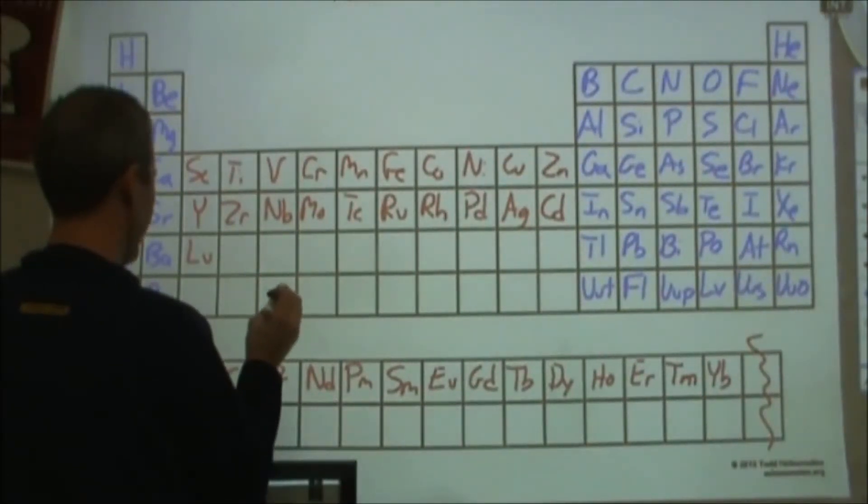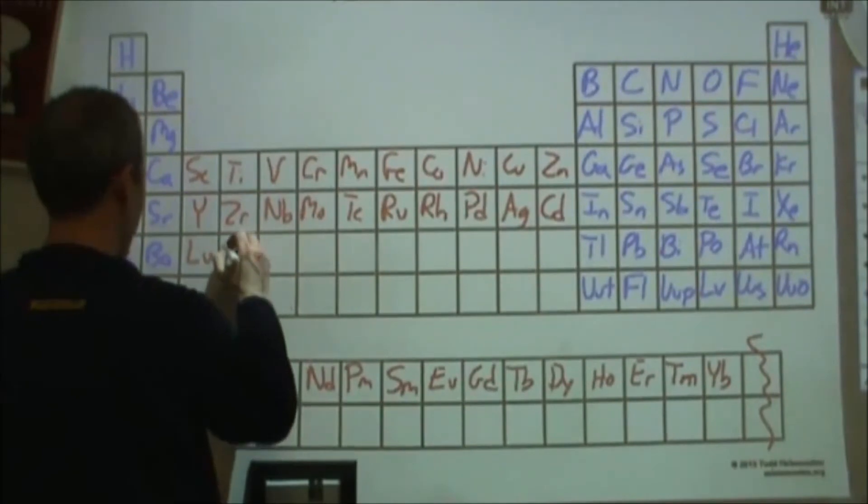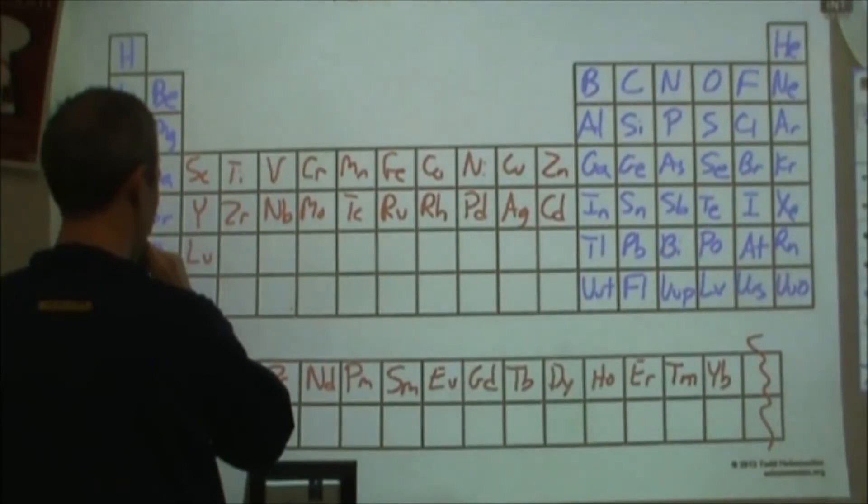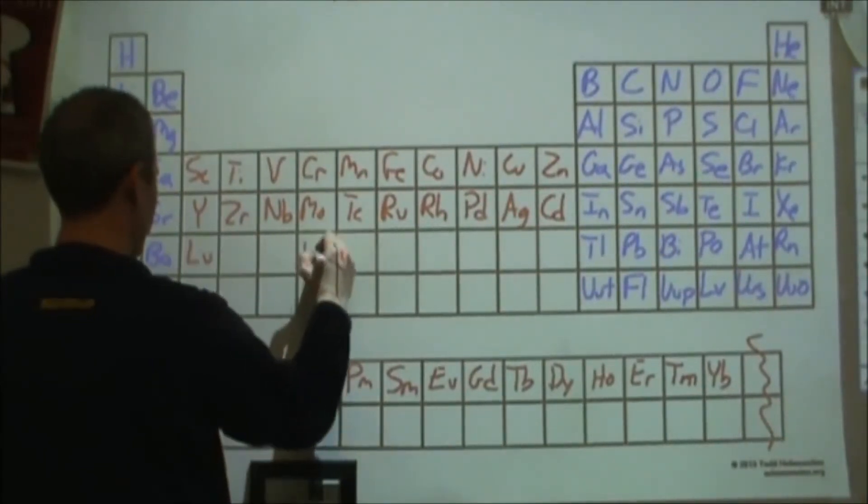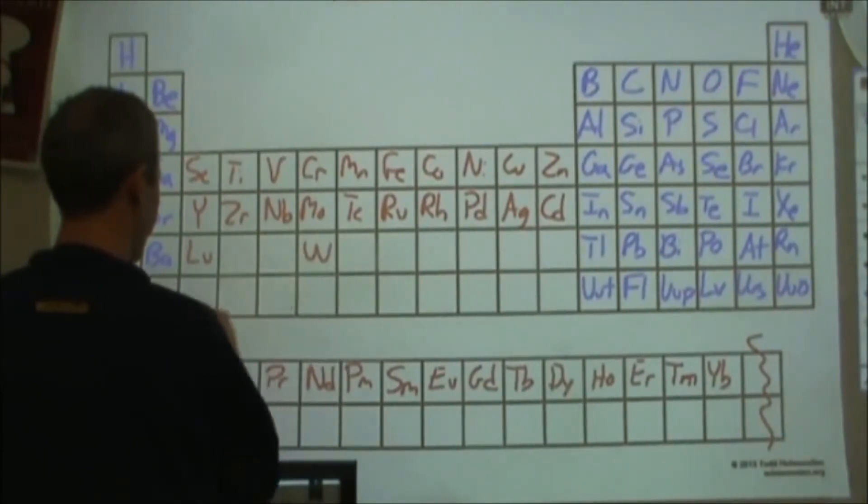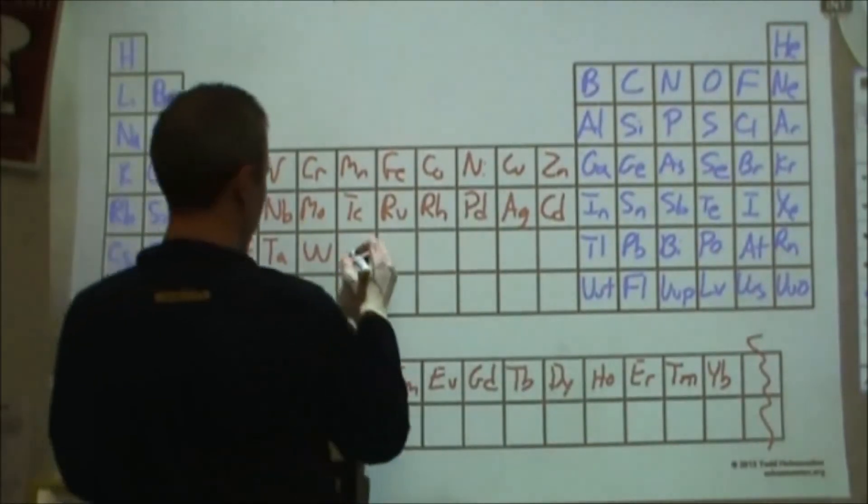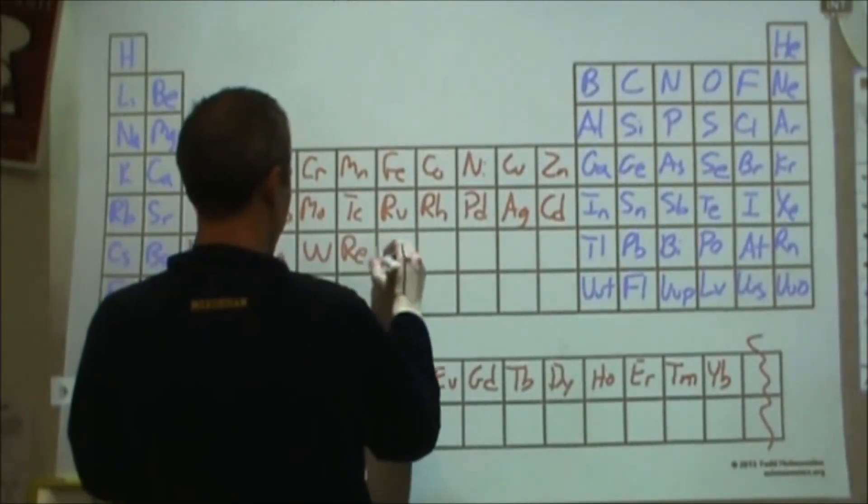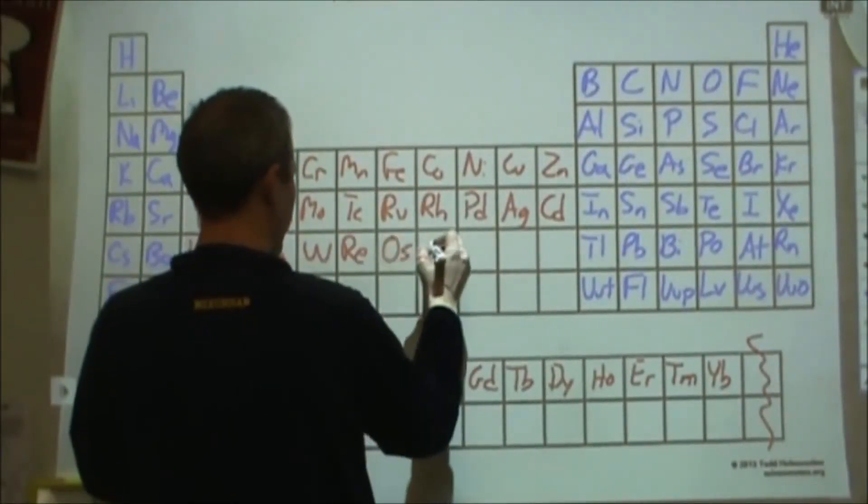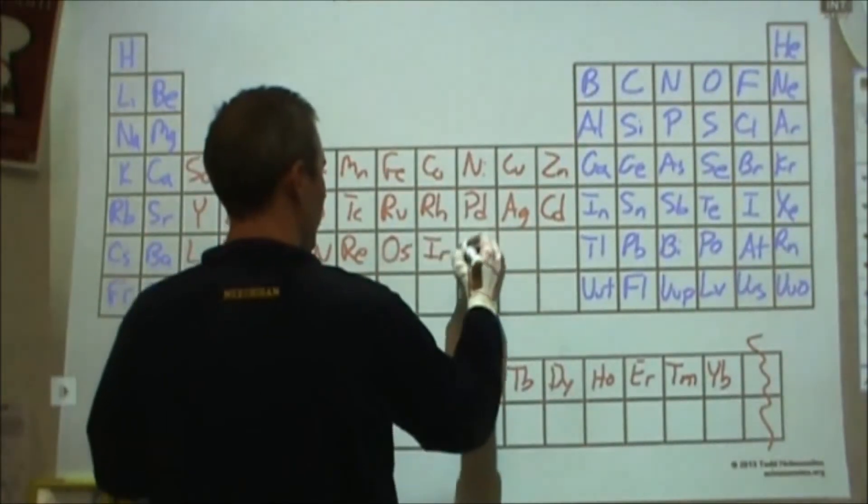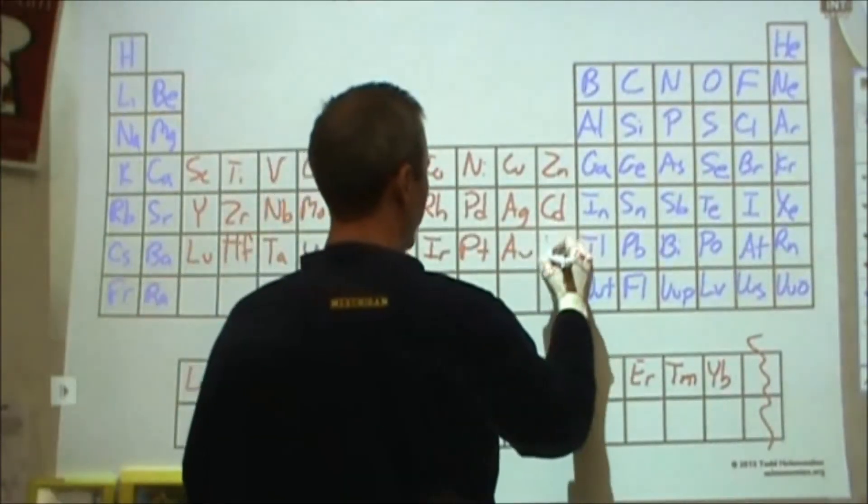So let's see, after lutetium is tungsten here, hafnium, and tantalum. That's hafnium here, tantalum there, tungsten. And then we have rhenium, osmium, iridium, platinum, gold, and mercury.